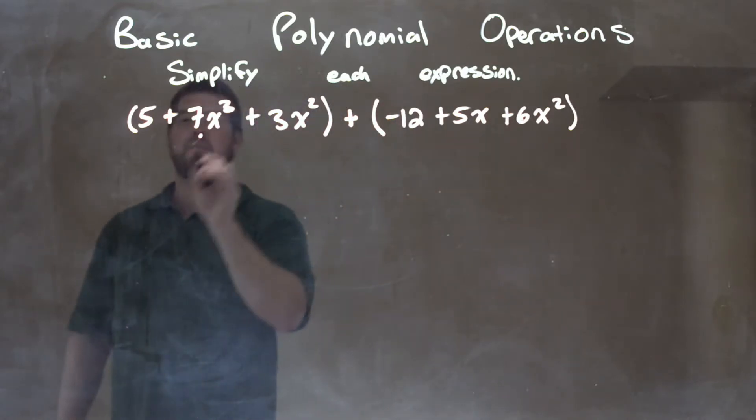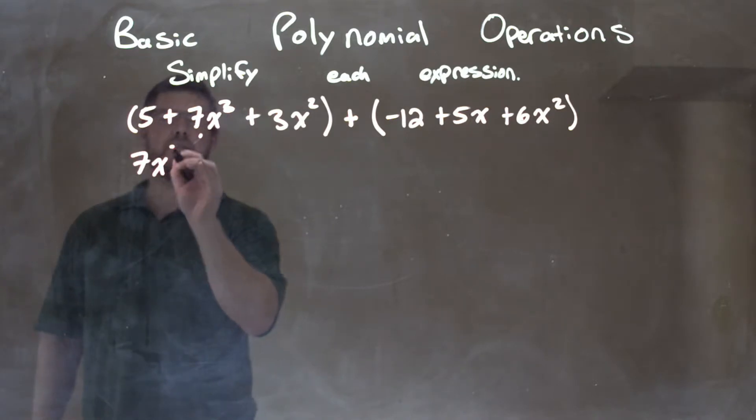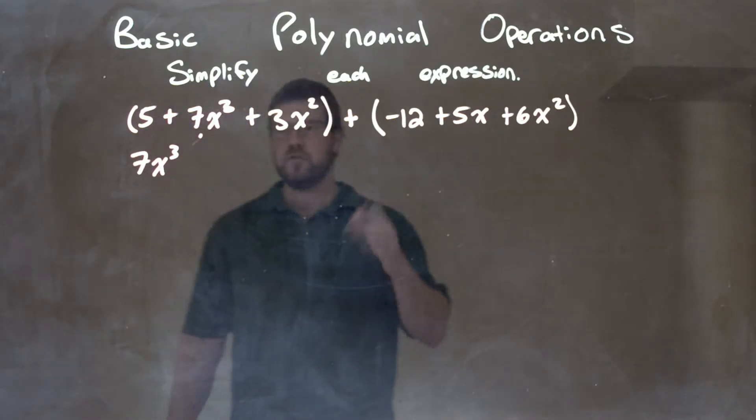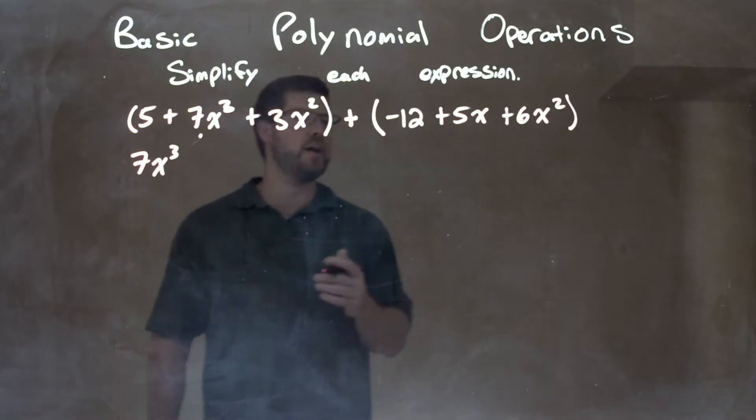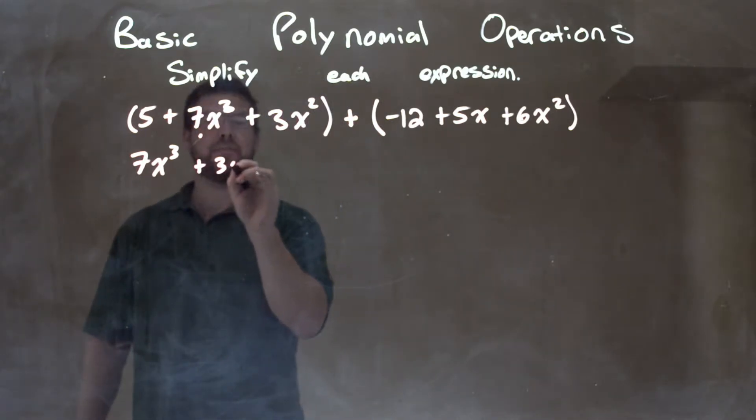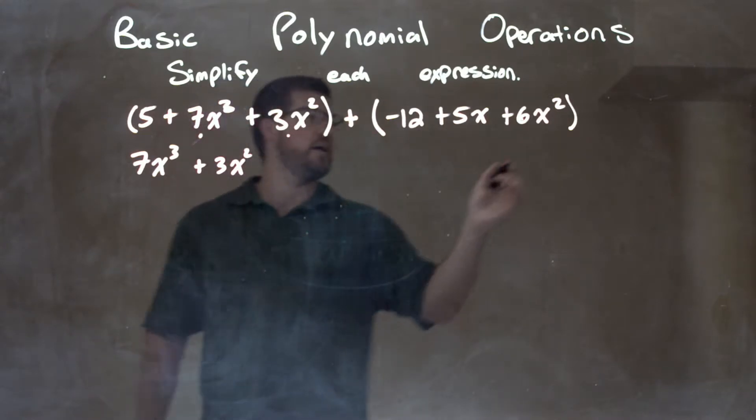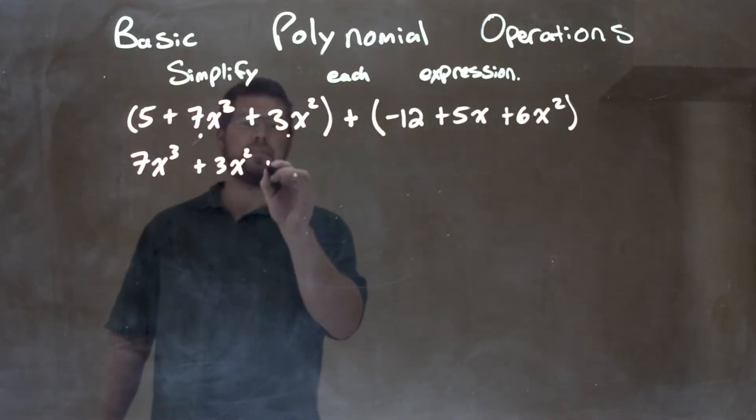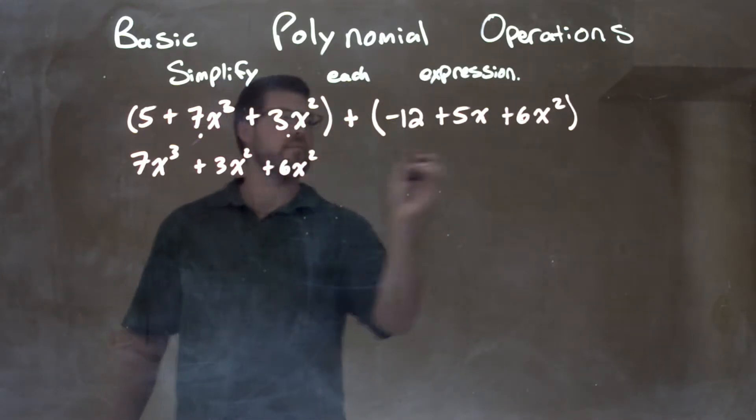Highest degree I see is to the third power, so I'm going to bring that down, 7x to the third power, and I put a dot underneath showing that I've brought it down. Next highest degree I see is to the second power. We have a 3x squared right here, and then a 6x squared.